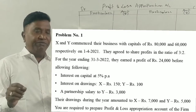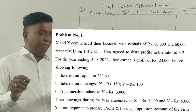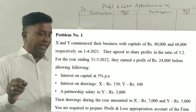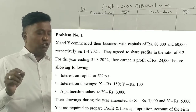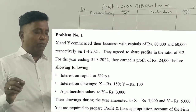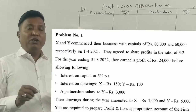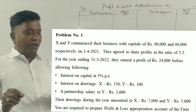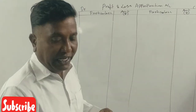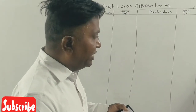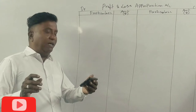Interest on Drawings: X is Rupees 150, Y is Rupees 100. Partner salary to Y is Rupees 3000. Their drawings during the year amounted to: X Rupees 7000, Y Rupees 5000. You are required to prepare the Profit and Loss Appropriation Account of the firm.